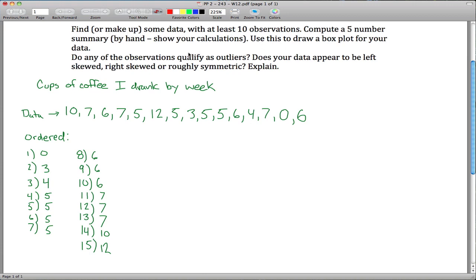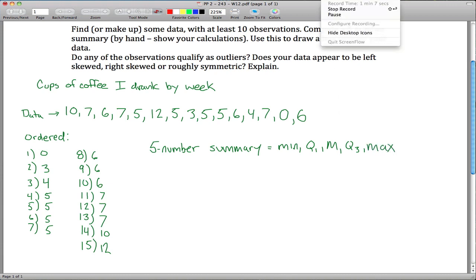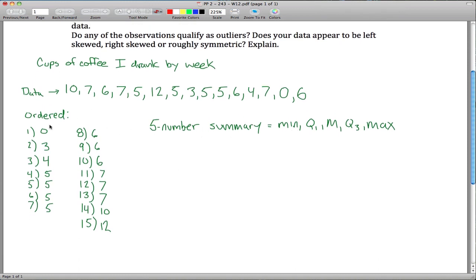So we want to compute the five number summary. Five number summary is the minimum, then Q1, then the median, then Q3, and then the maximum observation. I'll change pen color so this is a little easier to see. Minimum is pretty easy, just the smallest observation, so it's zero. So for our five number summary here, first number is zero.